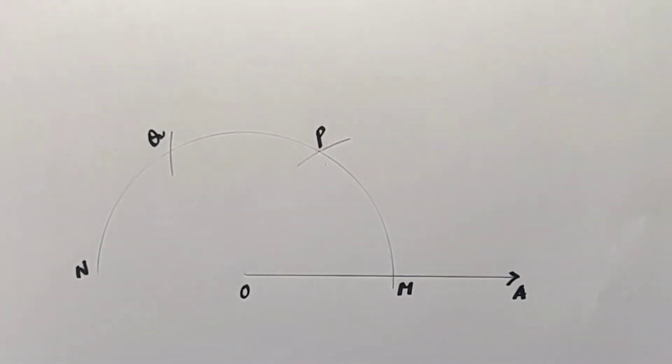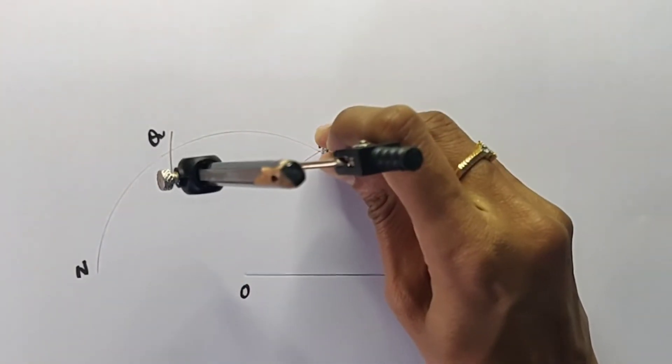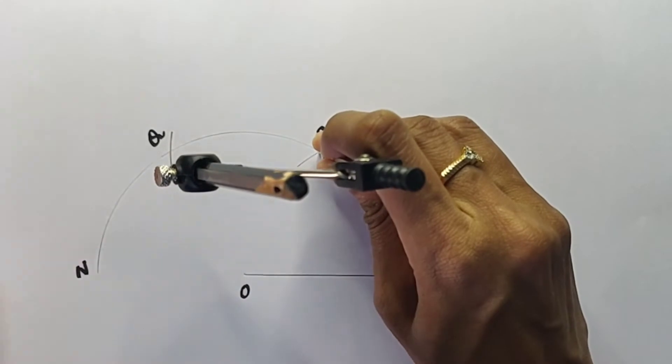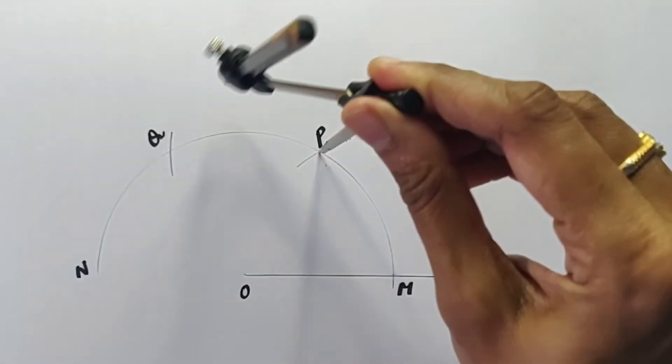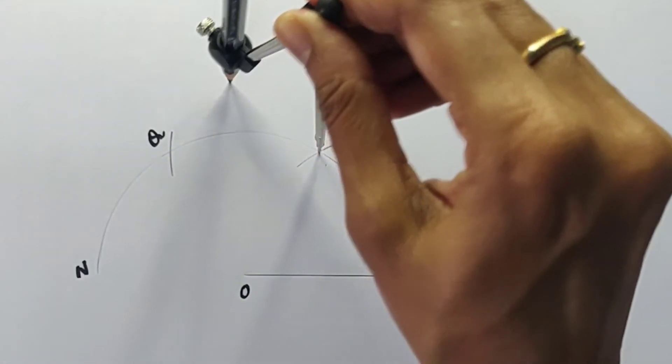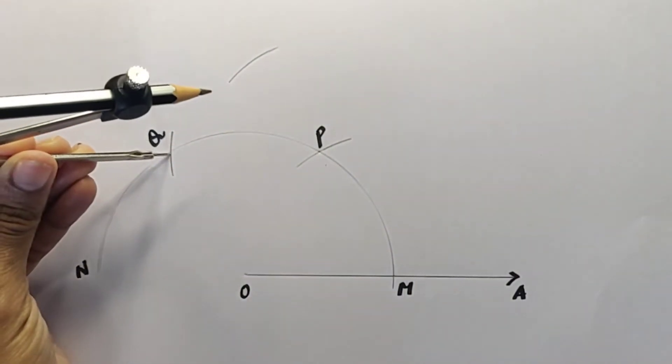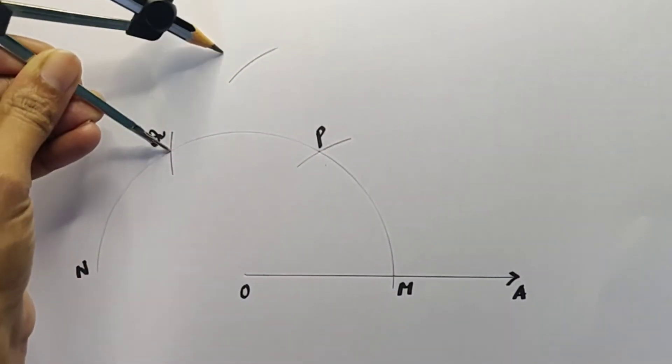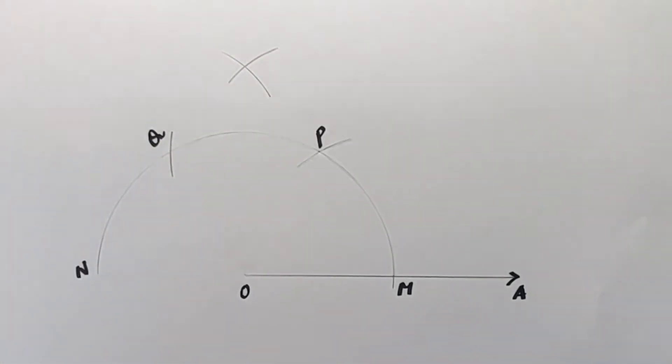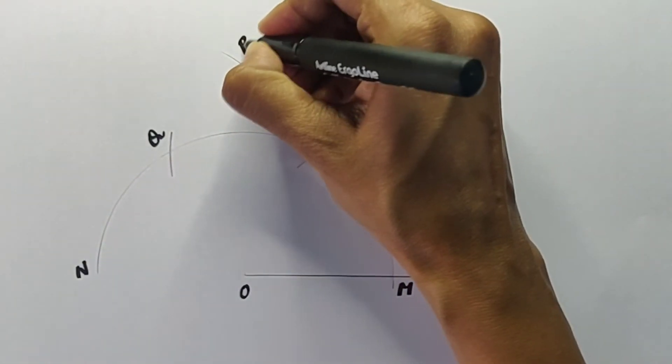Now, with P as center and more than half the length of PQ, draw an arc above and with the same radius, with Q as center, cut the previously drawn arc. Let's label this point of intersection as B.